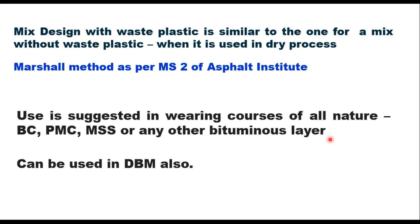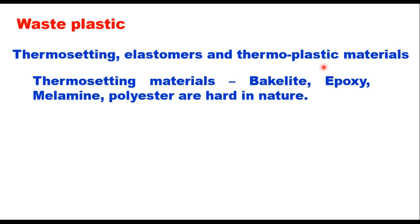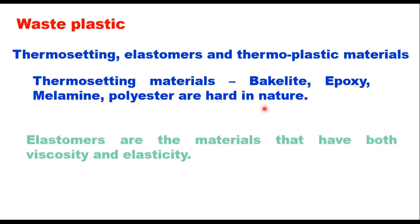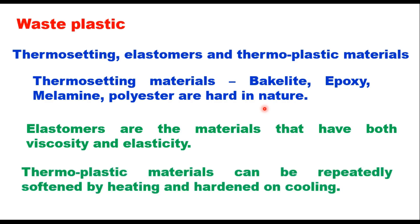Recently, waste plastic has also been used in the layer of dense bituminous macadam. There are three types of waste plastics: one is thermosetting or thermoset plastic, elastomers, and thermoplastic materials. Thermoset materials are like bakelite, epoxy, melamine, and polyester. They are hard in nature — once shaped, they cannot be softened or remolded by the application of heat, and therefore thermosetting waste plastic materials should not be used for dry process addition. Elastomers are materials that have both viscosity and elasticity; they are also referred to as thermoplastic rubber. Natural rubber, polyurethane, or polybutadiene are some examples of elastomers.